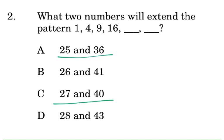And if your answer is they're all square numbers - so one times one gives us one, two times two gives us four, three times three gives us nine, four times four gives us sixteen. So five times five will give us twenty-five, and six times six will give us thirty-six. So our answer is A.